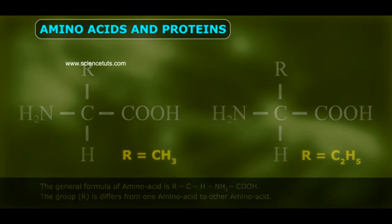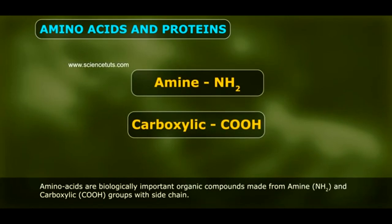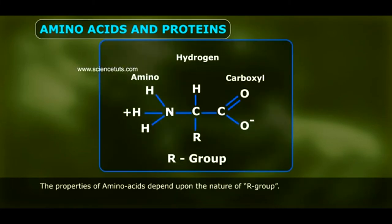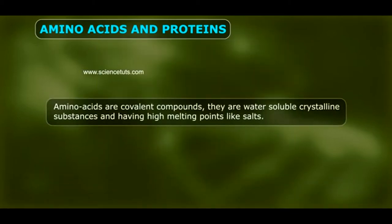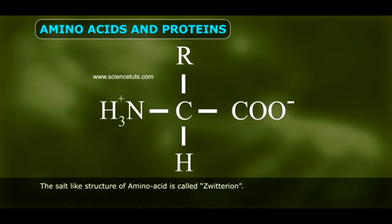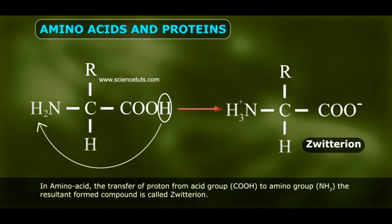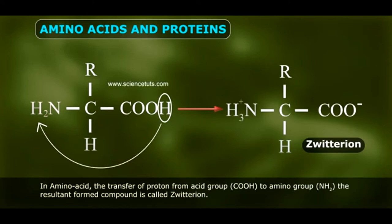Amino acids contain an amine group and a carboxylic group; they are biologically important organic compounds. The properties of amino acids depend on the nature of the R group — even if it is simply H, that gives glycine. Amino acids are covalent compounds, water-soluble crystalline substances with very high melting points, like salts. The salt-like structure of an amino acid is called a zwitterion. In a zwitterion, the transfer of a proton from the acidic group to the amino group produces a compound with both positively and negatively charged ions, but with a net charge of zero.